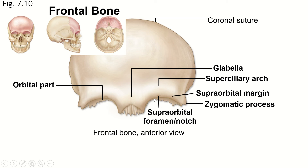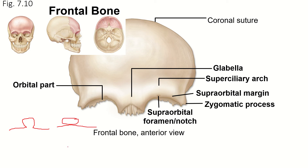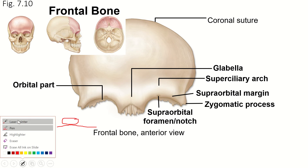Within that supraorbital margin there is a supraorbital foramen or notch. Foramen means hole. If it's not a complete hole then it's a notch — an incomplete hole. So if it is a notch it's usually like this: the bone comes across and makes a little indentation. If on the other hand the bone is complete and there's a little hole, then it's a foramen. Those are the differences there.